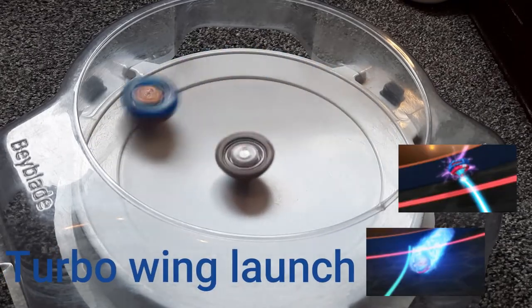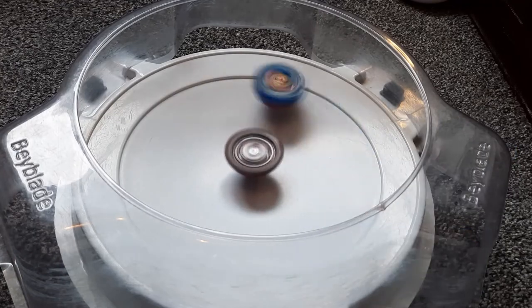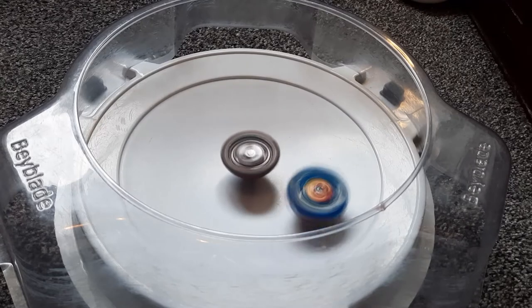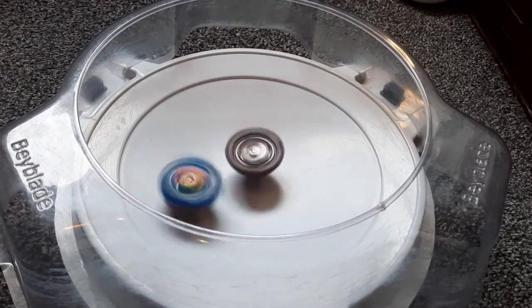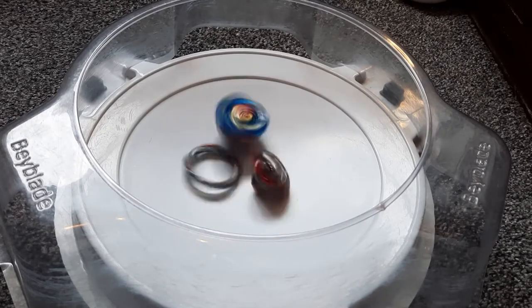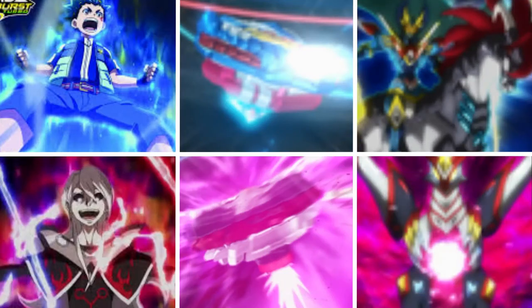Turbo wing launch is a move that I believe he adopted in Beyblade Burst Evolution, where Valkyrie rebounds off the stadium wall, gaining a boost in speed and momentum. This can be done multiple times to stack, resulting in a devastating strike. Now that I'm thinking about it, he might have got this move in the first season. I can't quite remember, so we'll just move on.